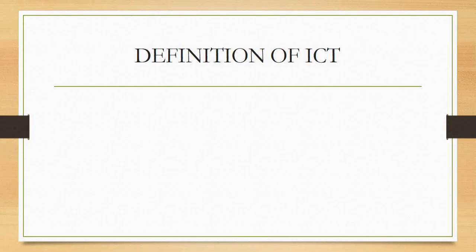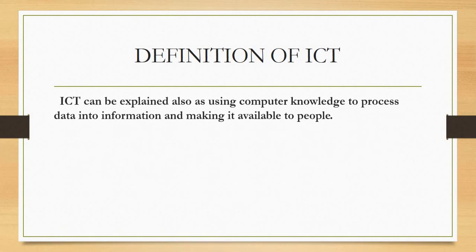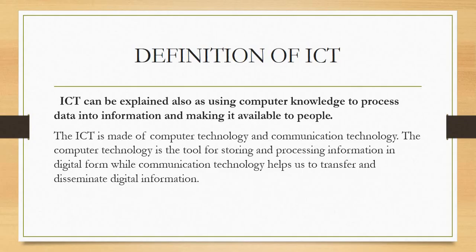ICT has no widely accepted definition. We would define ICT as using computer knowledge to process data into information and making it available to people. We will divide ICT into two parts: computer technology and communication technology. Computer technology is the tool for storing and processing information in data form, while communication technology helps us to transfer and disseminate that information.